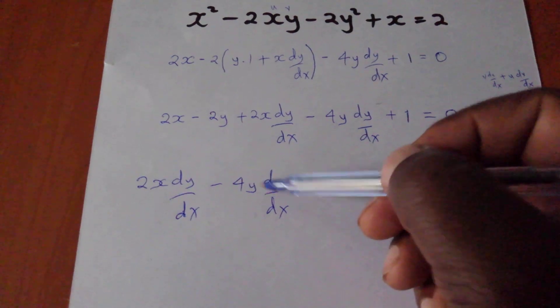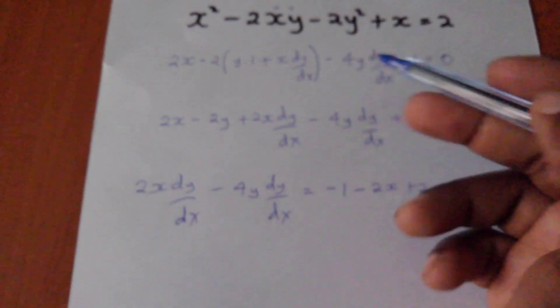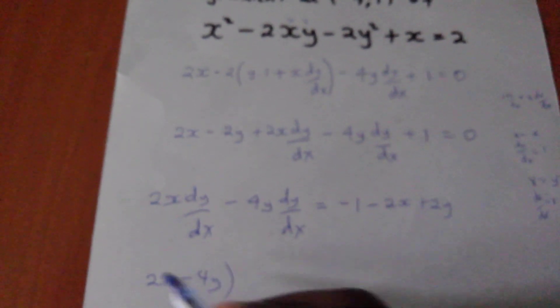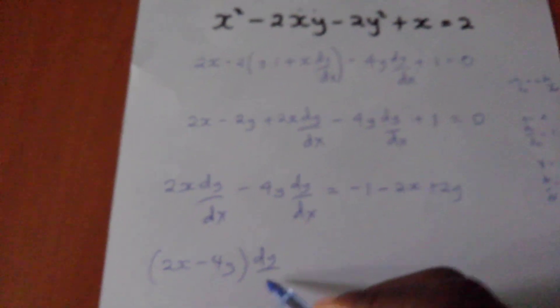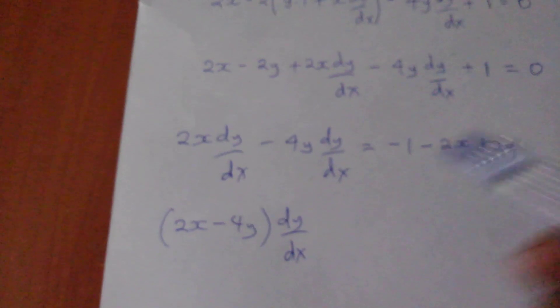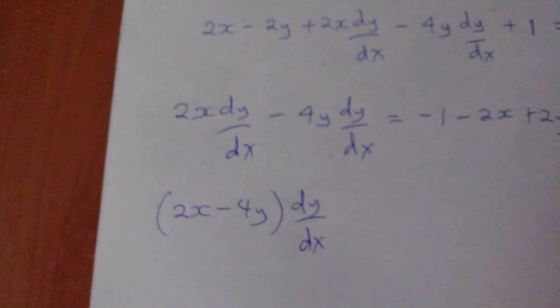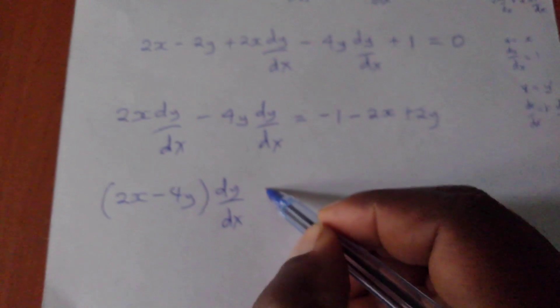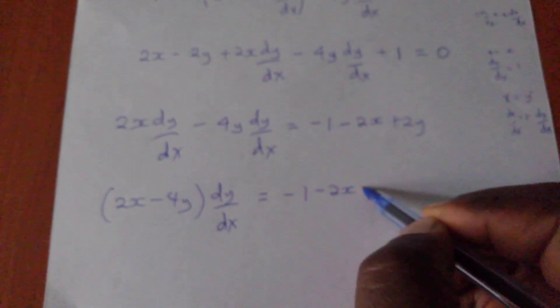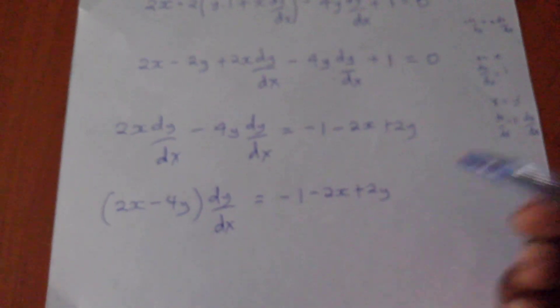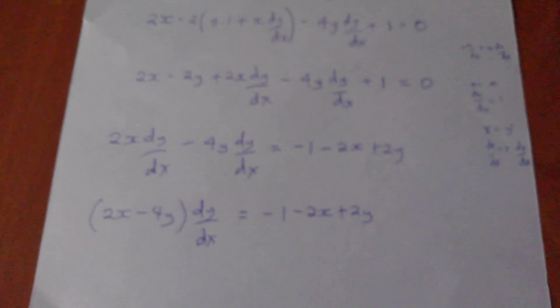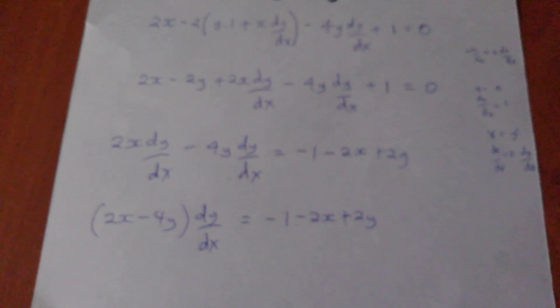So I have a common factor called dy dx. So in here, we will have 2x minus 4y in brackets, dy dx. I hope you are following. So it will equal to negative 1 minus 2x plus 2y. I hope you are following.